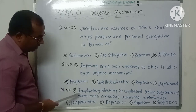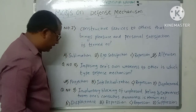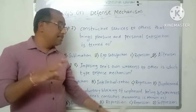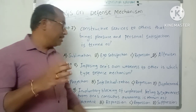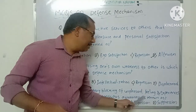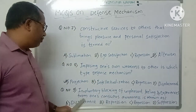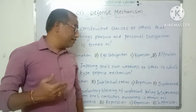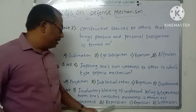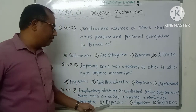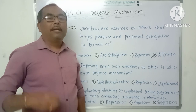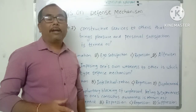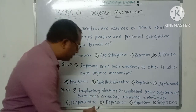Question number nine: Involuntary blocking of unpleasant feelings and experiences from one's conscious awareness is known as what? Here the person is unconsciously blocking unpleasant feelings or anxiety-producing situations and experiences from conscious awareness. That defense mechanism is not displacement — it is repression. Not regression and not suppression. In repression, the person unconsciously forgets anxiety-producing situations or unpleasant feelings and experiences. Our mind unconsciously forgets them. That is nothing but repression. The correct answer is repression.